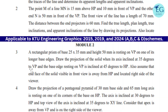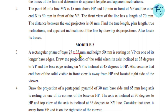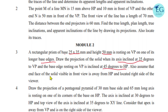Question number three: a rectangular prism of base 25mm and 35mm and height 50mm is resting on VP on one of its longer base edges. Draw the projections of the solid when its axis is inclined at 35 degrees to VP and the base edge resting on VP is inclined at 45 degrees to HP. Also assume that the end face of the solid visible in front view is away from HP and located on the right side of the viewer.